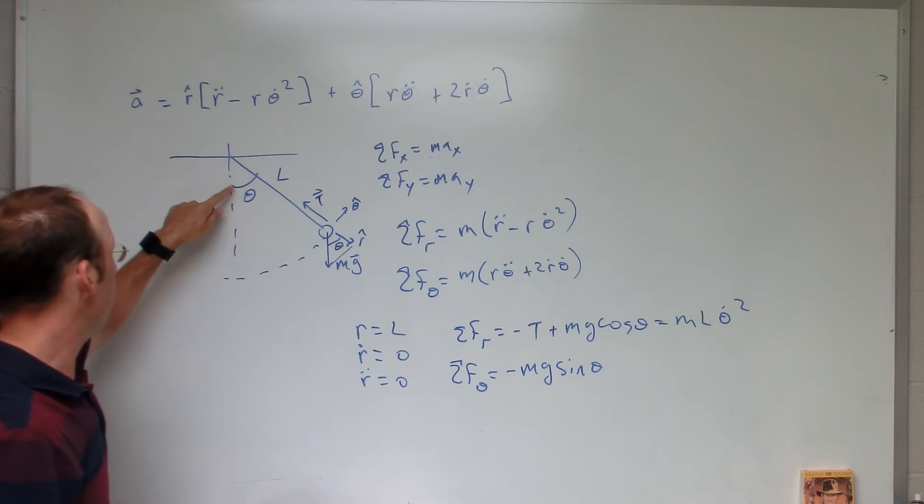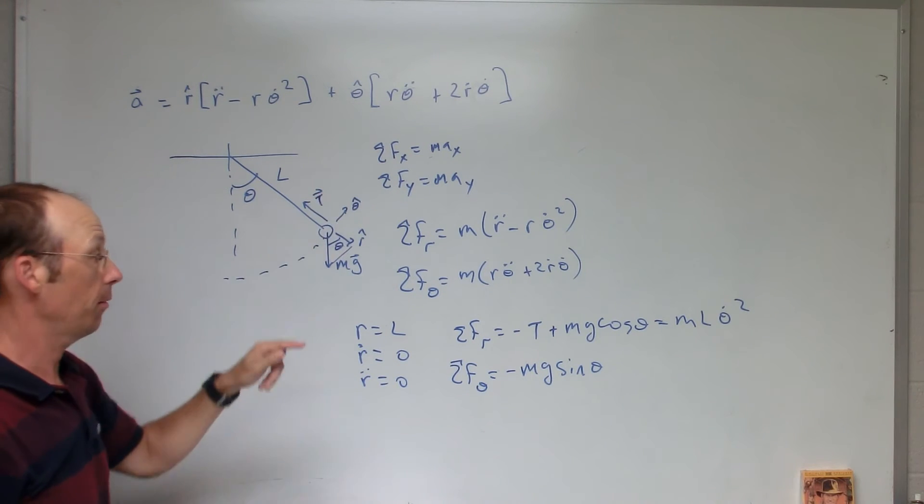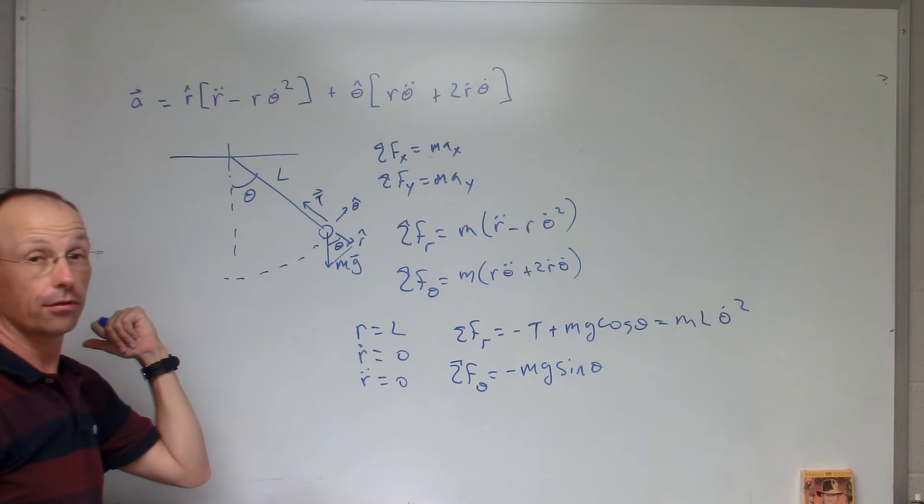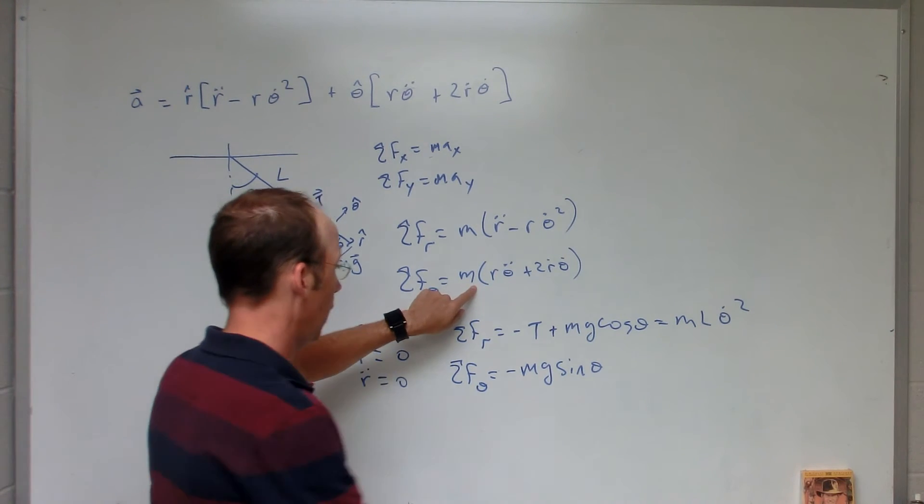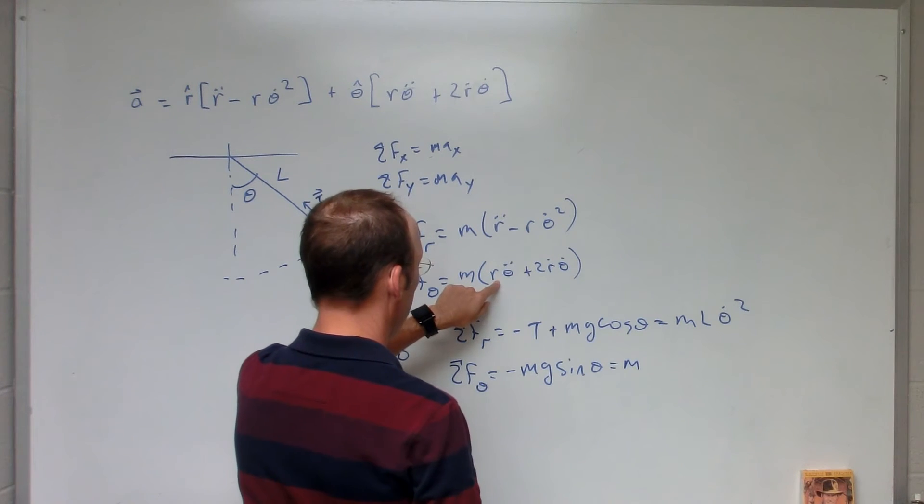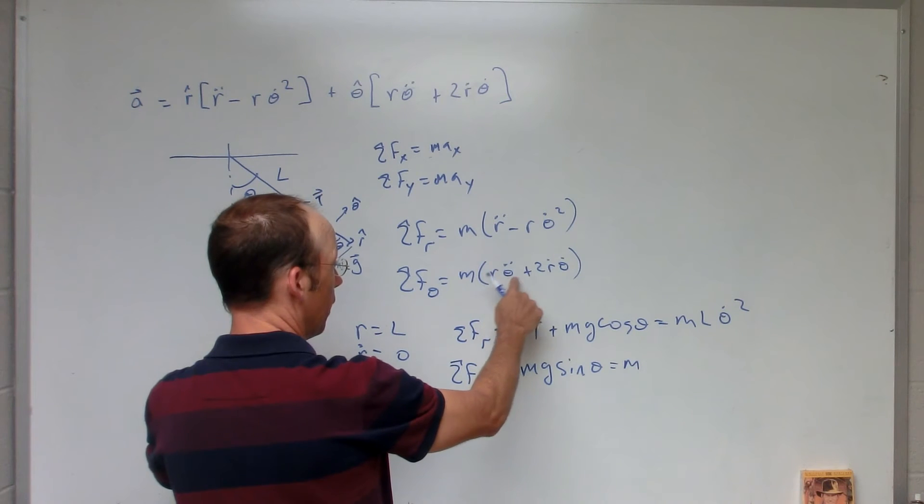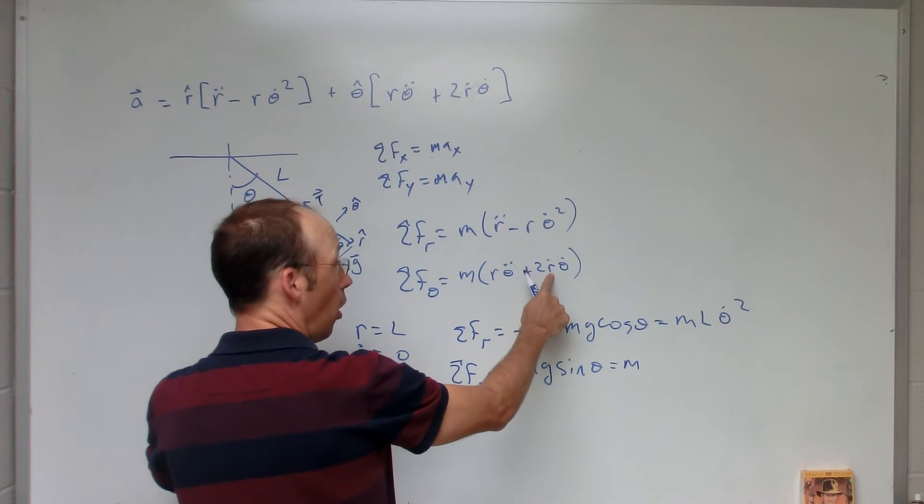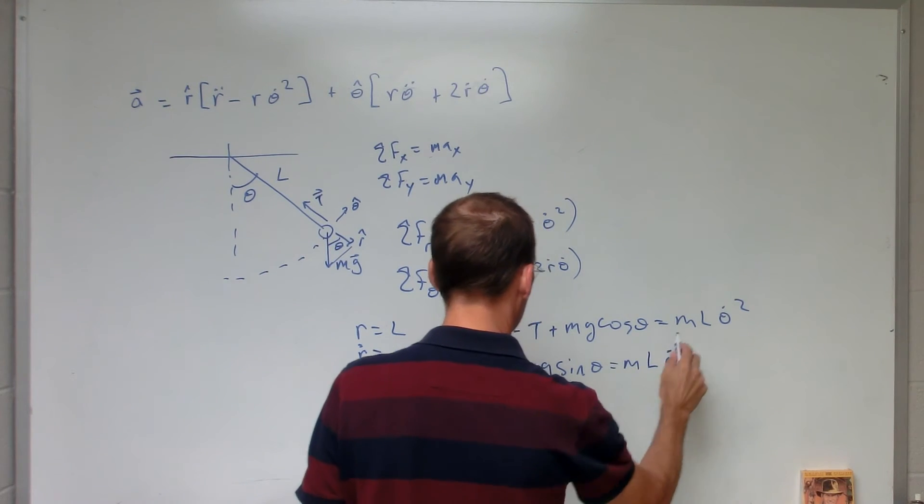Negative because if I call that theta, that would be the direction of increasing theta. So theta hat's that way. The gravitational component's this way. And so now over here, I get the acceleration is going to be m times r theta double dot, which is just going to be L times theta double dot, r dot is 0. So I get m L theta double dot.